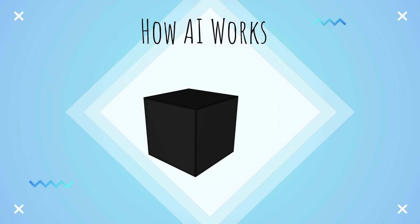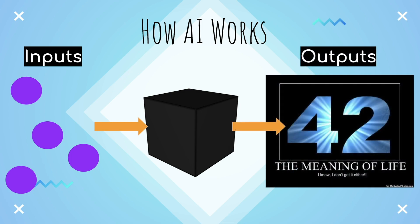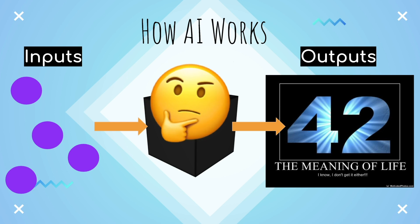AI, or artificial intelligence, is often described as a black box. The process to train AI generally goes like this: we put inputs into the computer, train the computer to get an AI model, and it uses this model to predict our outputs. However, it's not easy to know what the computer sees in the inputs to come to this conclusion.